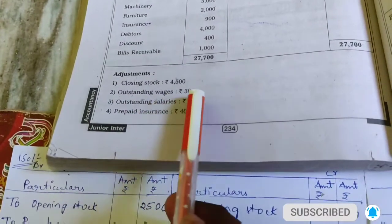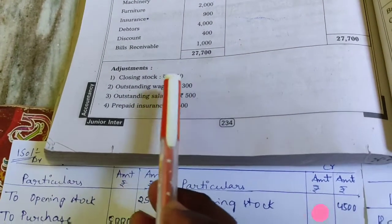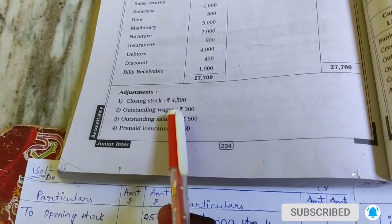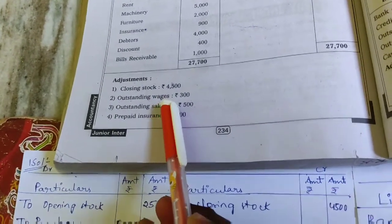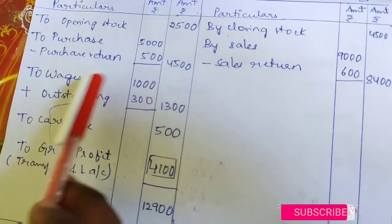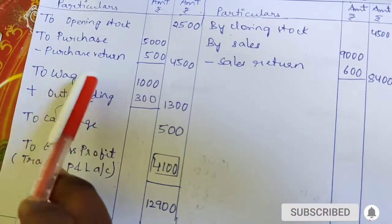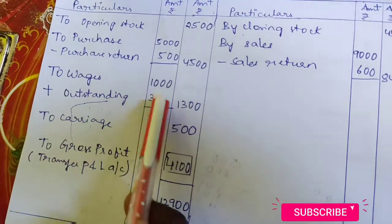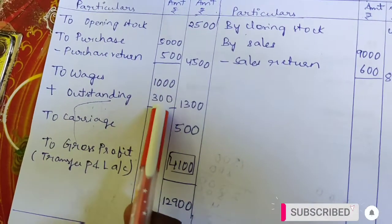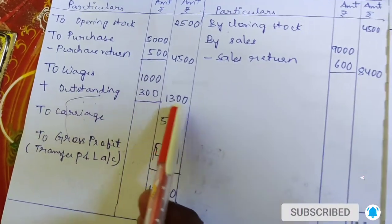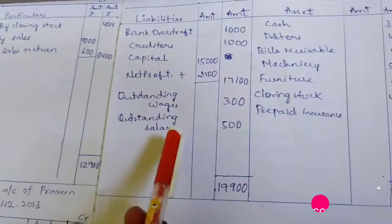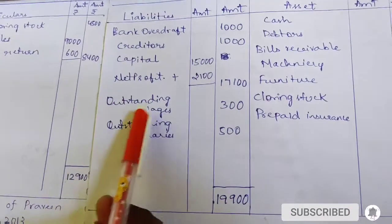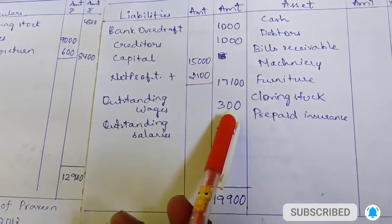Next adjustment: outstanding wages 300. For outstanding items, we add to the related item. So wages: 1,000 plus 300 equals 1,300. The outstanding wages of 300 also goes to the liability side of the balance sheet as outstanding wages.